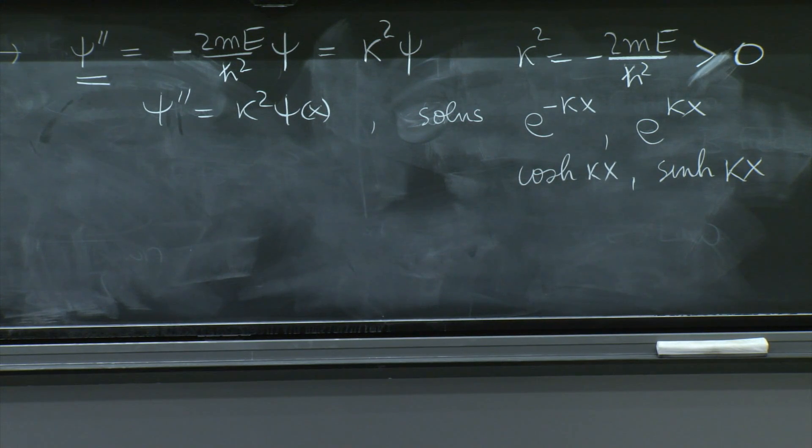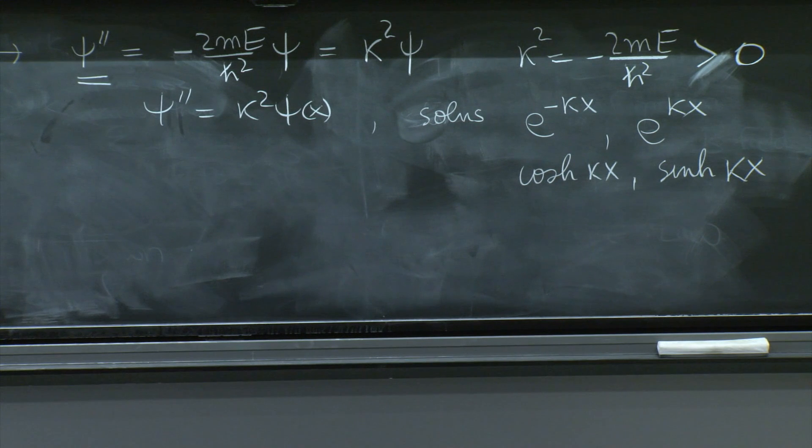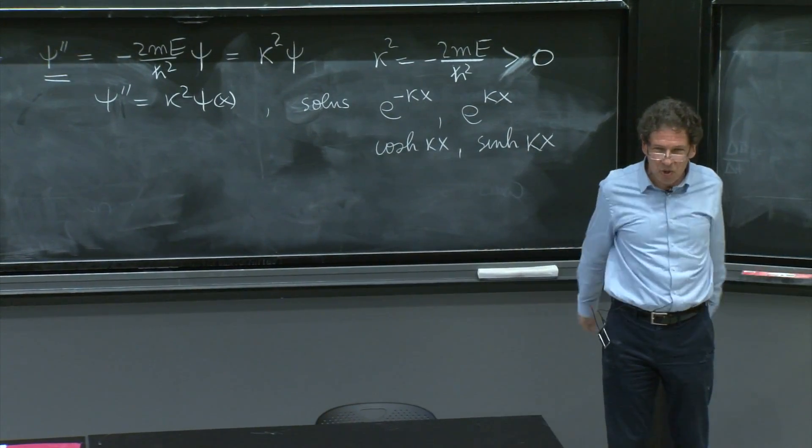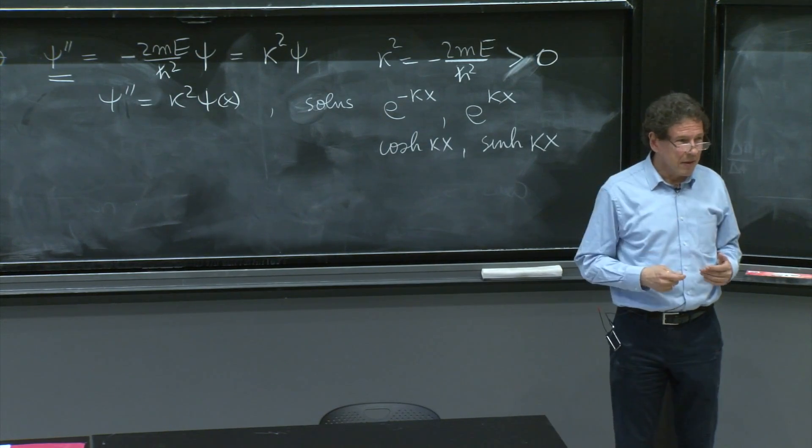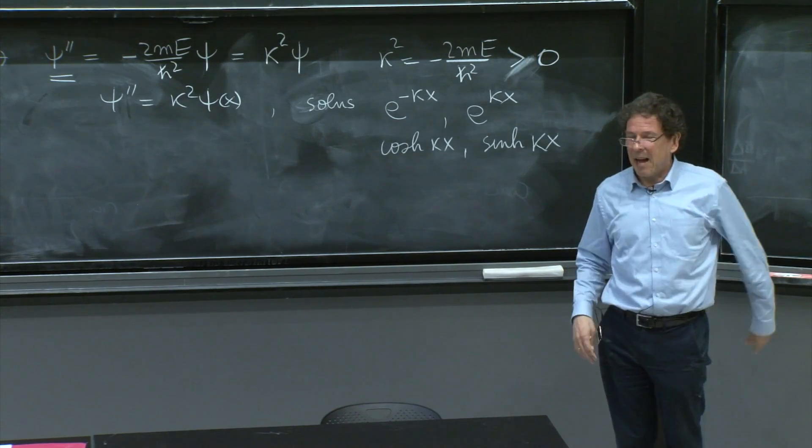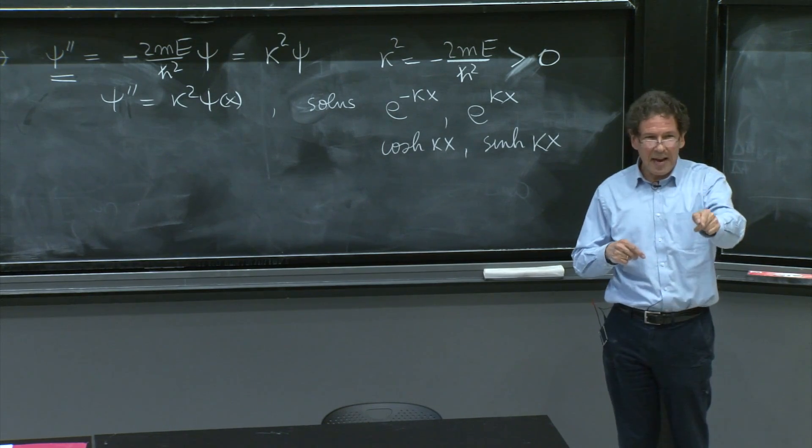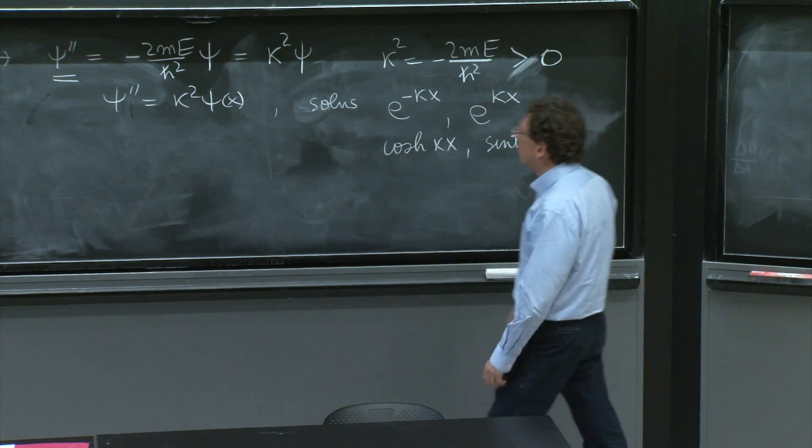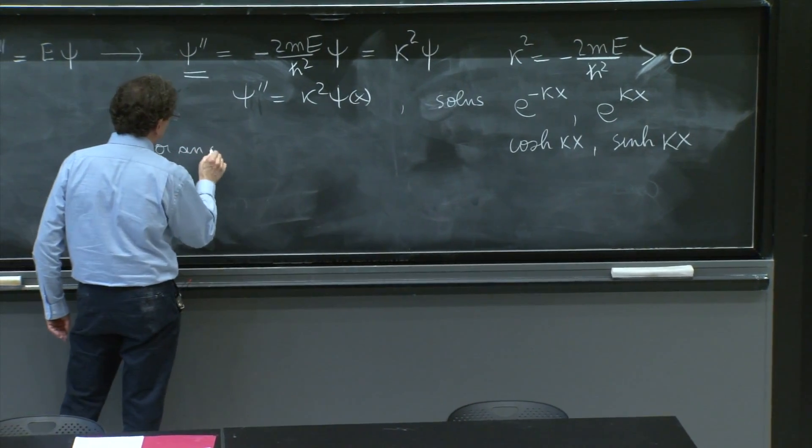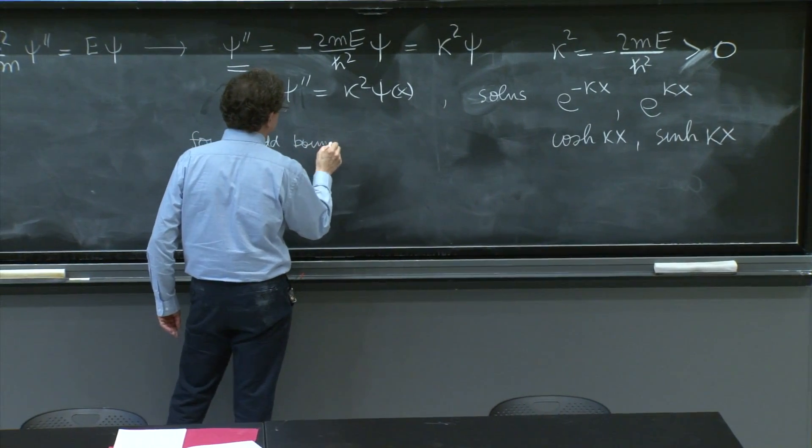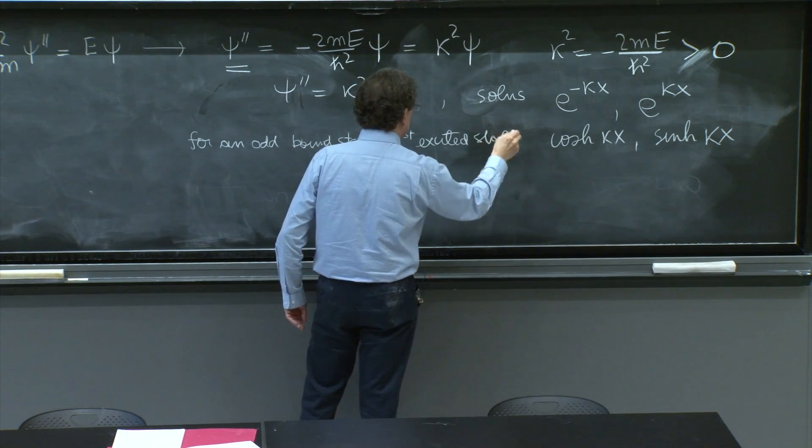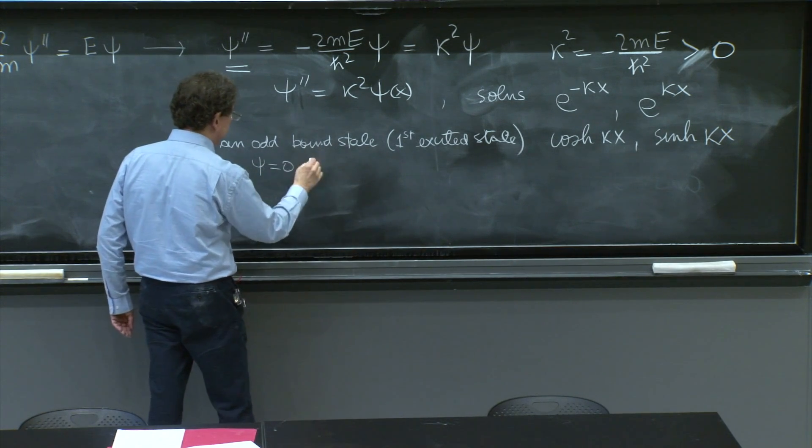But now let's see if I can figure out how many bound states there are. If there is one bound state, it's going to be even. It's the ground state, it has no nodes, has to be even because the potential is even. If I have the first excited state after the ground state, it will have to be odd. It would have to vanish at x equals 0 because it's odd. There is its node. It has to have one node. So for an odd bound state, or first excited state, you would have to have ψ = 0 at x equals 0.